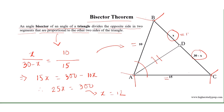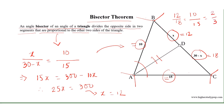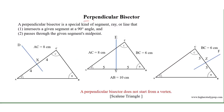So one segment equals 12 and the other equals 30 minus 12, which equals 18. We can verify that 12 divided by 18 equals 10 divided by 15, which equals 2 divided by 3, confirming the proportionality.